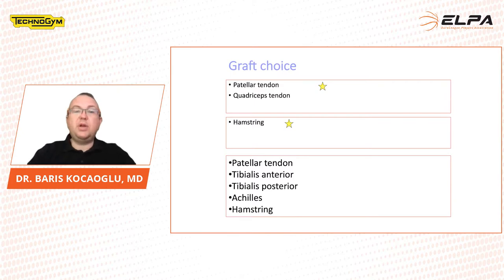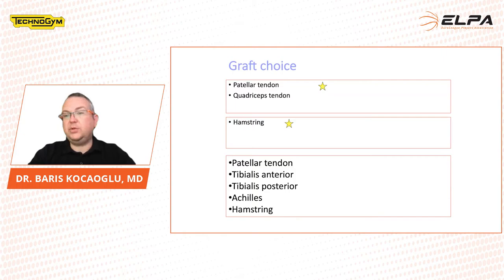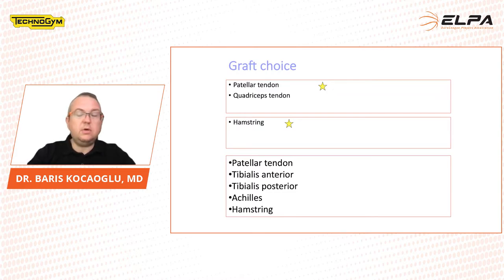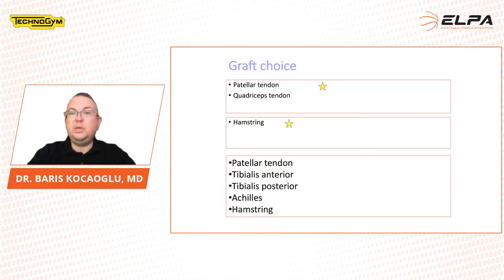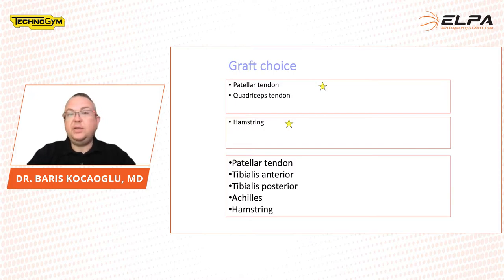When we look at graft choice for ACL reconstruction, 10 years ago we frequently used hamstring tendons. But basketball players are like gladiators — it's a collision sport — so we need a stiffer reconstruction. Hamstring is losing its popularity, and new tendon choices, which are patellar tendon and quadriceps tendon, are increasing in interest.